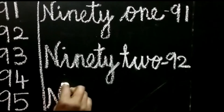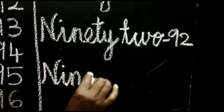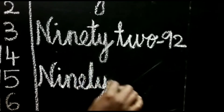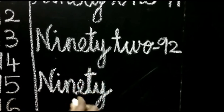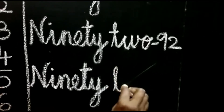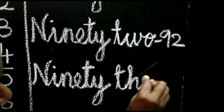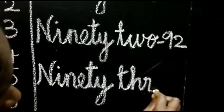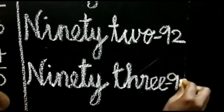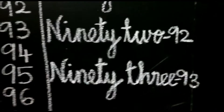Same spelling for 90: N-I-N-E-T-Y. What is the spelling for 3? T-H-R-E-E. So 93.